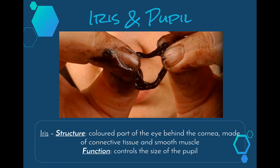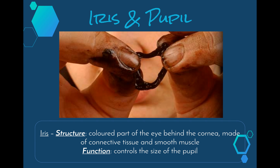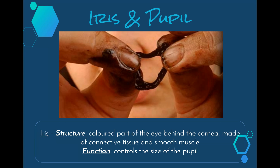The iris and the pupil — we really only need to know about the iris, but the two go hand in hand. The iris is the colored part of our eye, located behind the cornea and made up of connective tissue and smooth muscle. Its job is to control the size of the pupil. The pupil is technically not a structure — it is an opening at the front of the eye that allows light in. The iris expands and contracts to make the pupil bigger or smaller depending on how much light is in the environment.